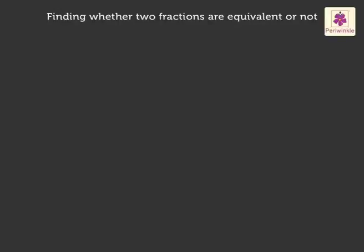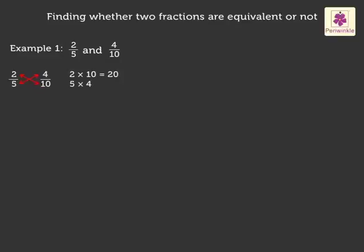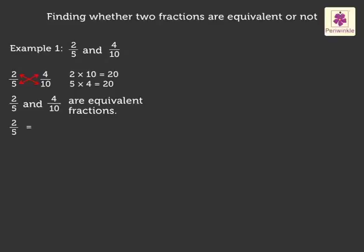We can also find out if two fractions are equivalent or not by cross-multiplying. If both the products are equal, then they are equivalent fractions. Let us see a few examples. Example one: two upon five and four upon ten. Here, we cross-multiply the numbers. That is, we multiply two and ten, and five and four. We know two into ten is equal to twenty and five into four is equal to twenty. Here, both the products are equal. Thus, two upon five and four upon ten are equivalent fractions. We write it as two upon five is equivalent to four upon ten.